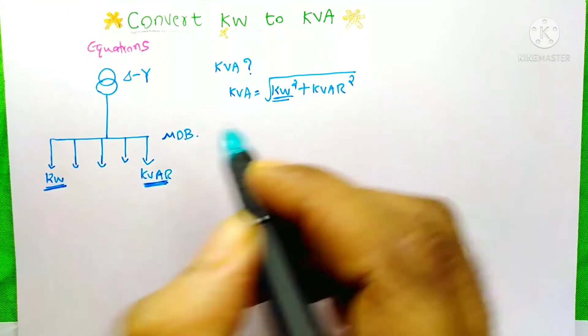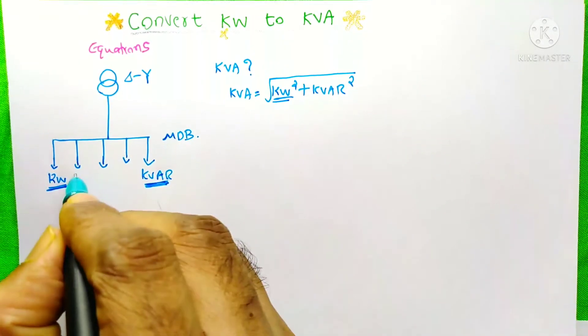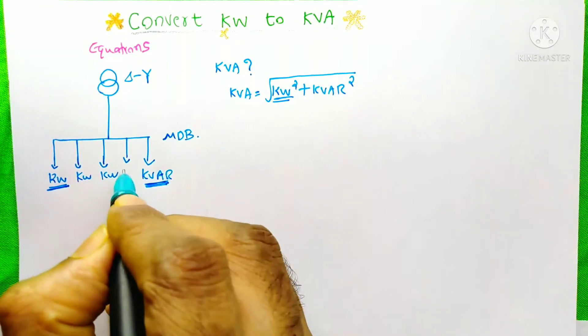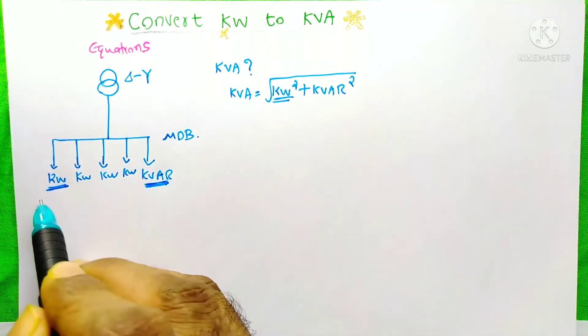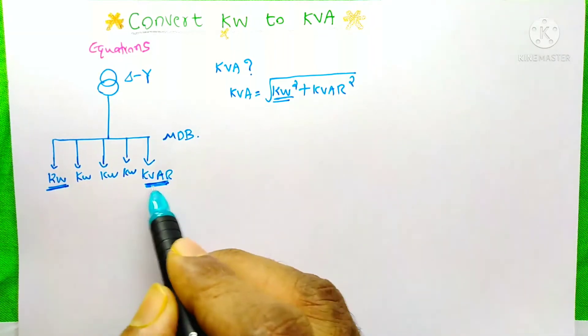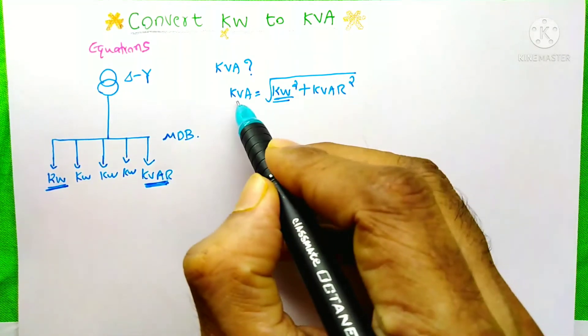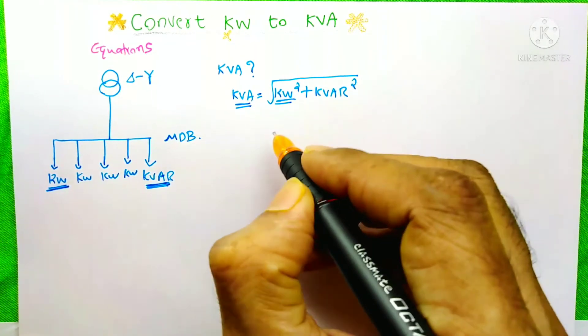This kW is the total kW of all these loads. See here is kW, kW, different types of loads are over here. With the total load of that kW squared, we will add this kVAR, then we will get the kVA. Now I am taking another situation.